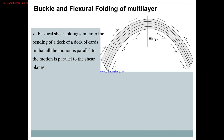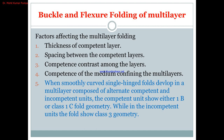For buckle and flexural folding of multi-layers: flexure shear folding is similar to the bending of a deck of playing cards. Just as playing cards slip relative to each other when bent, multi-layers in natural rocks slip similarly — one layer moving upward and another downward. Motion is parallel to the shear planes; all layers act as shear planes in this multi-layer folding mechanism.